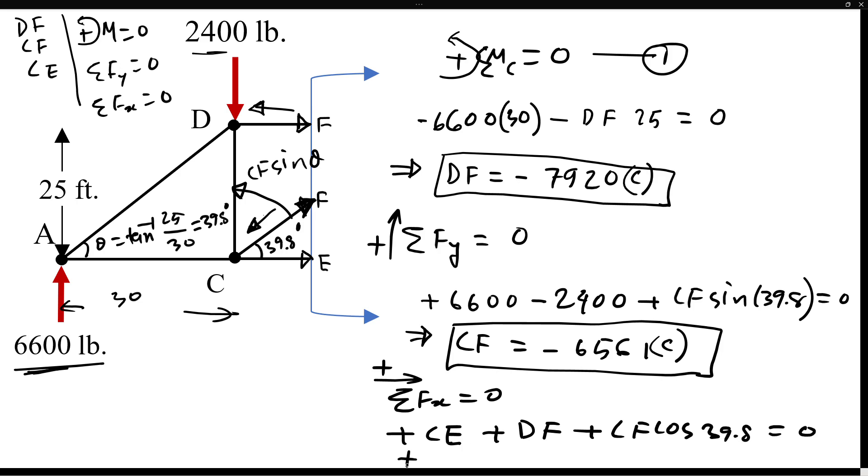So if we put CE - now DF was calculated negative 7920, CF also was calculated negative 6561 cosine 39.8 degrees - everything sums to zero. Here I found CE is positive 12,960. Now again, positive negative is not an important factor here. It is whether this member is in compression or tension. Now CE direction was correct - we assumed by chance correctly - so it is pulling the point C. If it's pulling the point, then it's in tension. So 12,960 pounds is in tension for this member.